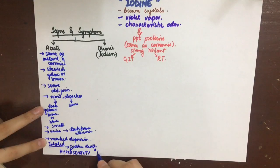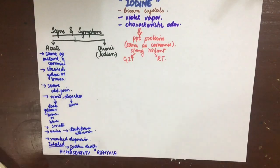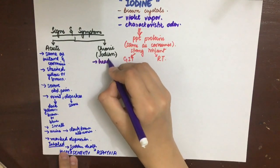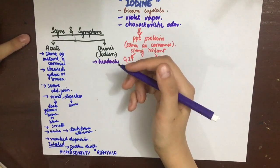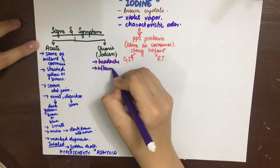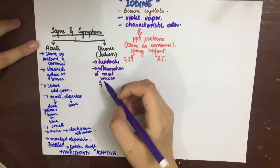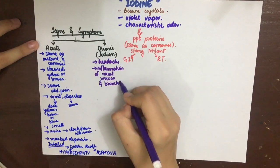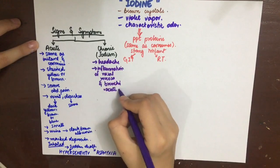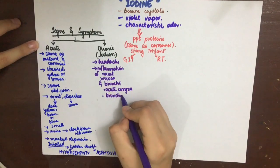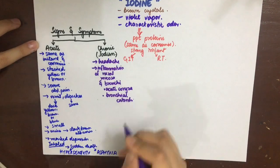There is marked depression with weak pulse, delirium, and collapse. When iodine is inhaled acutely, it can cause sudden death due to hypersensitivity or edema of the glottis leading to asphyxia.